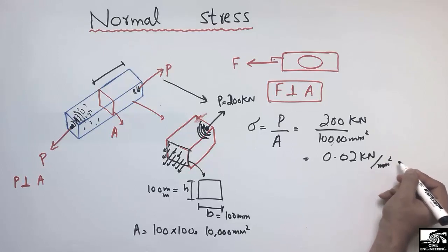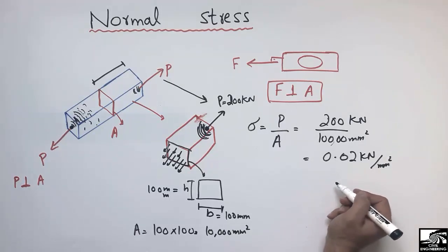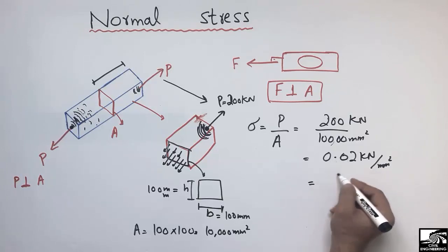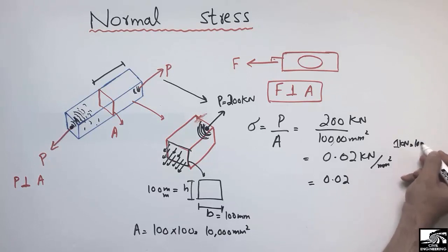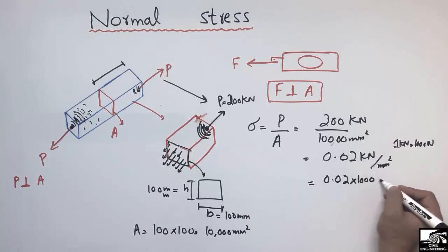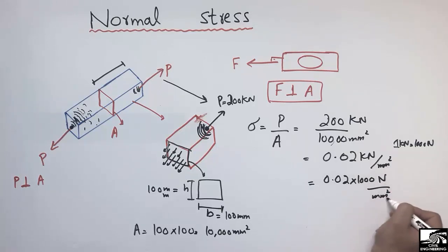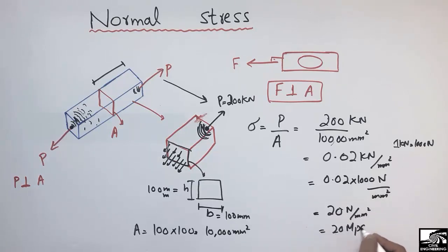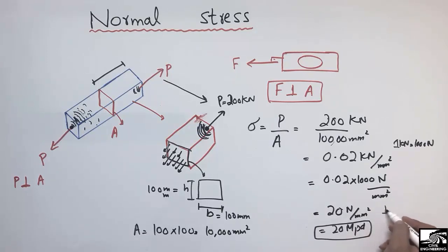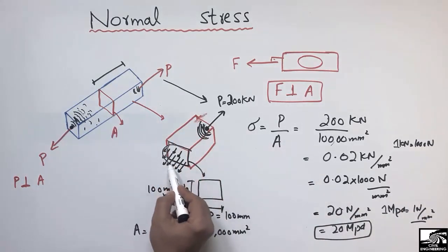We get 0.02 kilonewtons per square millimeter. To convert to a more standard unit like megapascals, we multiply by 1,000 to convert kilonewtons to newtons, since 1 kN = 1,000 N. This gives 20 newtons per square millimeter, which equals 20 megapascals. So the normal stress created inside this object is 20 MPa.